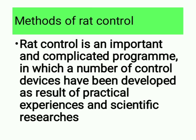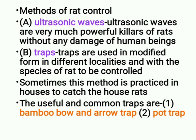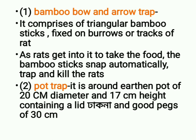Methods of rat control: rat control is an important and complicated program in which a number of control devices have been developed as a result of practical experience and scientific research. First method is ultrasonic waves: ultrasonic waves are very powerful killers of rats without any damage to human beings. Next, traps: traps are used in modified form in different localities. The useful and common traps are the bamboo bow-and-arrow trap and the pot trap. The bamboo bow-and-arrow trap comprises triangular bamboo sticks fixed on burrows or tracks of rat; as rats enter to take the food, the bamboo sticks snap automatically, trapping and killing the rats.